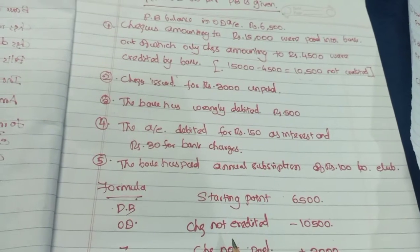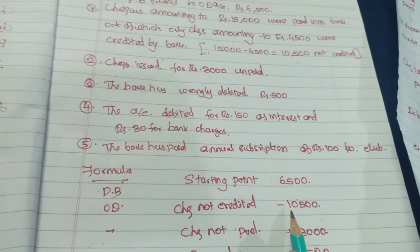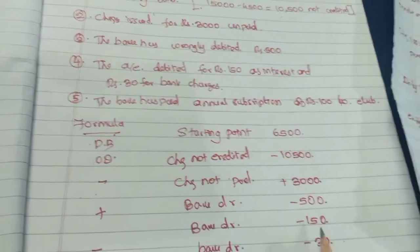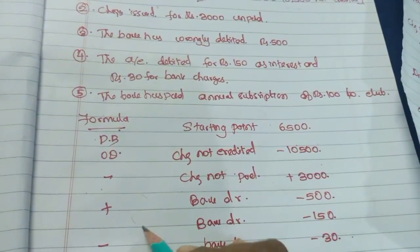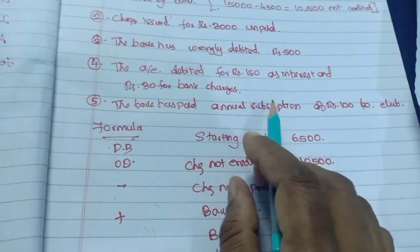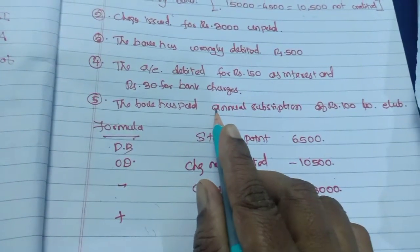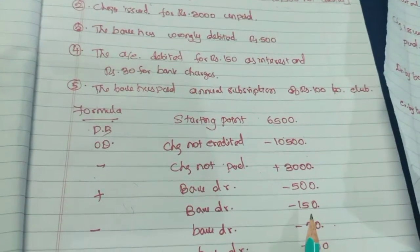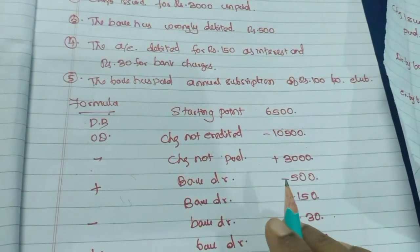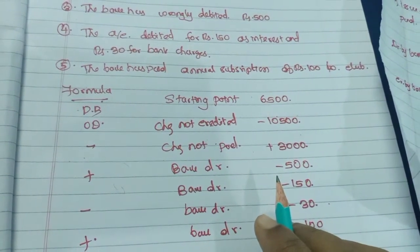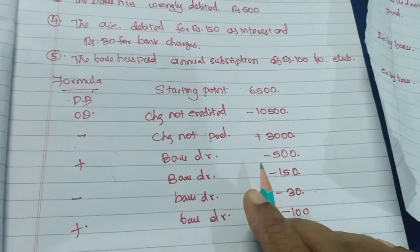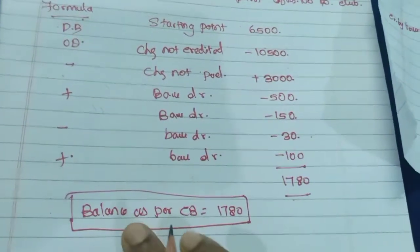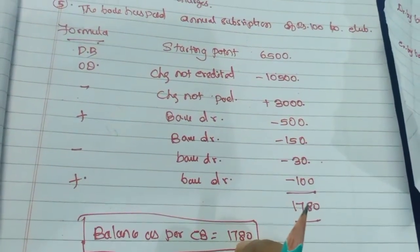Using the formula — minus, plus, minus, plus — for passbook OD: check deposited not credited — minus Rs. 10,500. Check issued but not paid — plus Rs. 3,000. Bank wrongly debited Rs. 500 — debit by bank — minus Rs. 500. Account debited Rs. 150 as interest and Rs. 30 for bank charges — debit by bank — minus Rs. 150 and minus Rs. 30. Bank paid annual subscription of Rs. 100 — debit by bank — minus Rs. 100. Solving gives balance as per cashbook of Rs. 1,780.